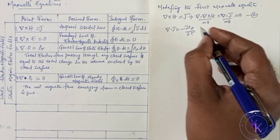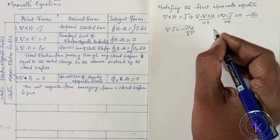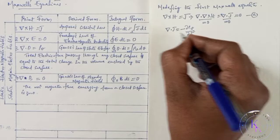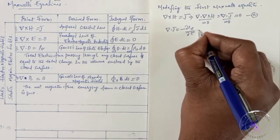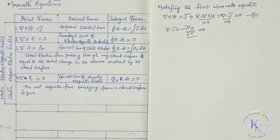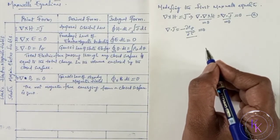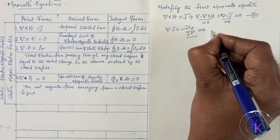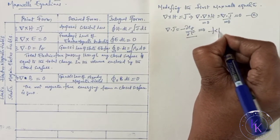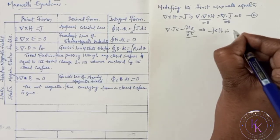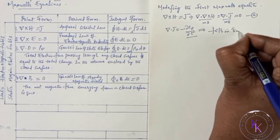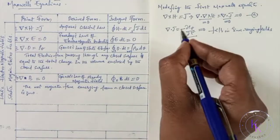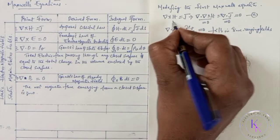Where rho_V is the volume charge density. Equation A is true only if del dot J equals zero. So for time-varying electric fields, this condition fails — meaning the original equation del cross H equals J fails in time-varying fields, and we need to modify it.